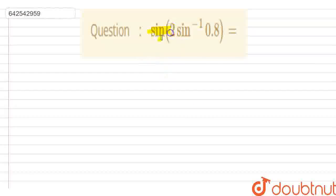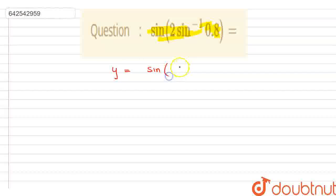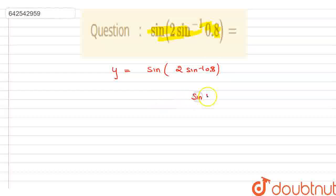In this question, we have y = 2·sin⁻¹(0.8). Now we can apply the formula for sin(2θ), which we can write as 2·sin(θ)·cos(θ).